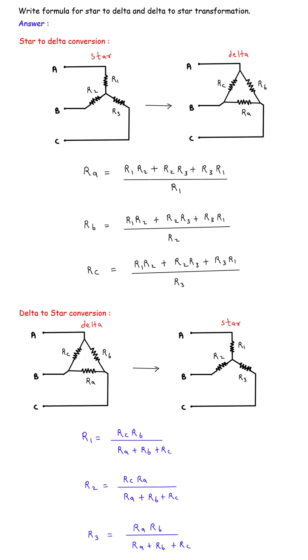To convert to star, we use a different formula. Each star resistor is the product of the two adjacent delta resistors divided by the sum of all three delta resistors.